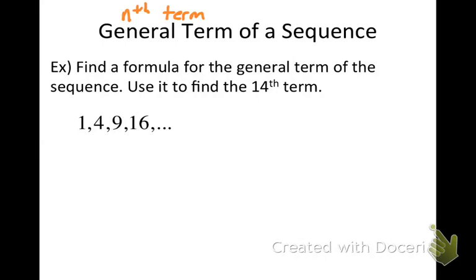If n was equal to 11, you would be referring to the eleventh term. A general term can be any term in a sequence. We're going to find a formula for the general term of a sequence, then use that formula to find the fourteenth term. When you can find a formula for the general term, you can figure out what any term is without having to know all the previous ones — I could find a ninety-ninth term without knowing the previous ninety-eight. The general term formula takes the term number you're trying to find, you plug it in, and it gives you the value of that term.